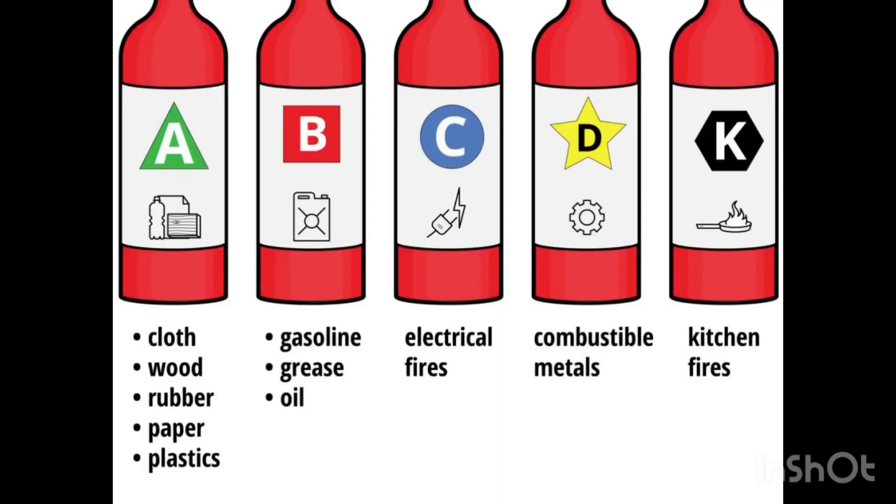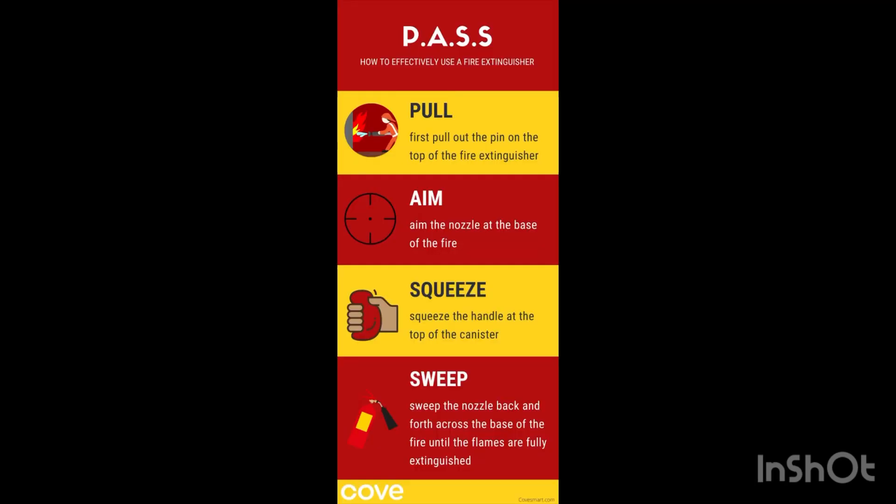For Class F fire — cooking oils and fats — water spray, foam spray, ABC powder, and carbon dioxide are not suitable. Wet chemical is suitable. To use a fire extinguisher: pull the pin, aim at the base of the fire.